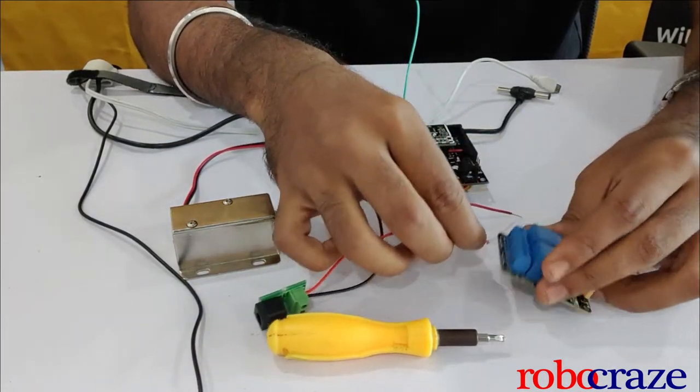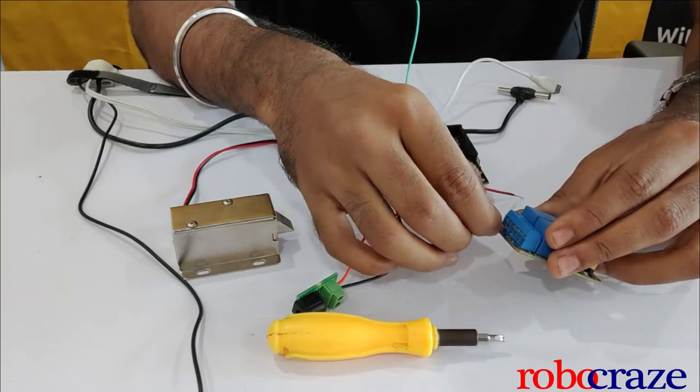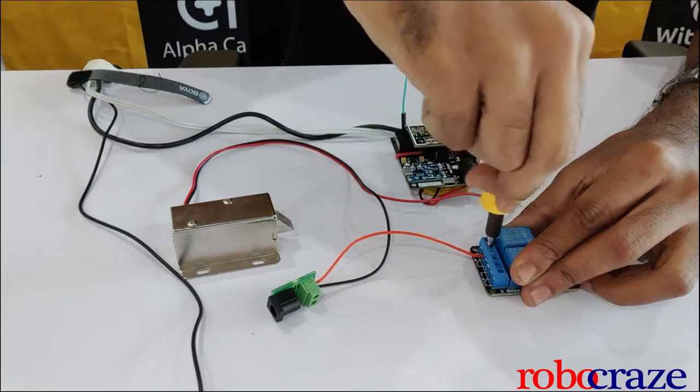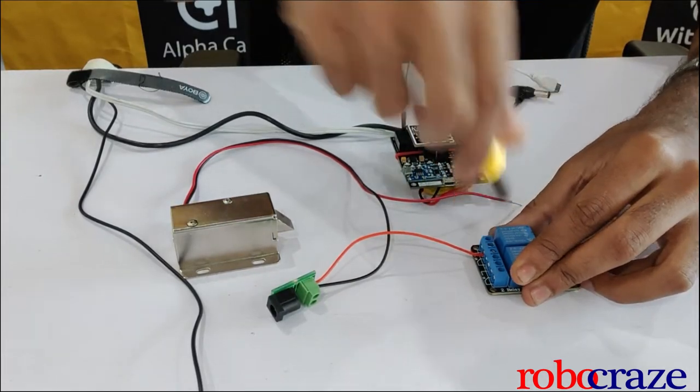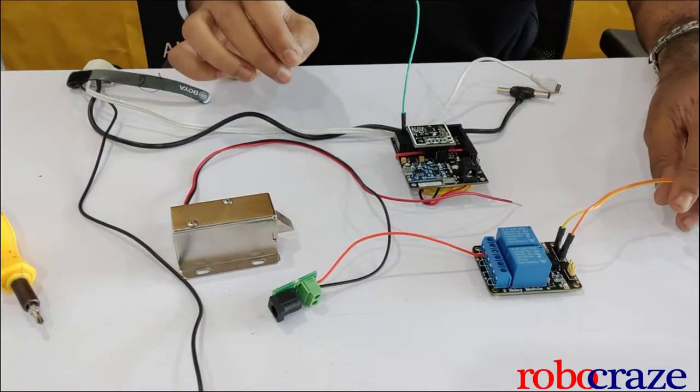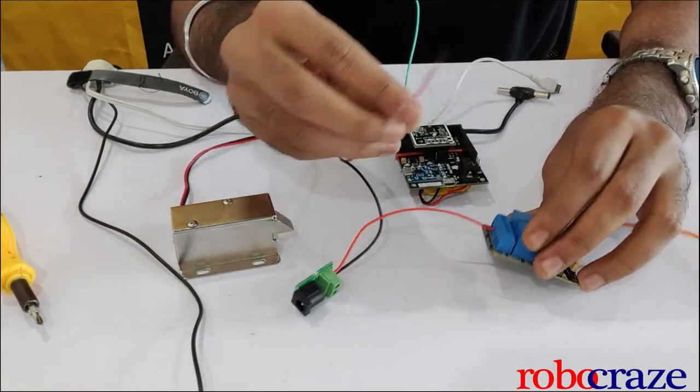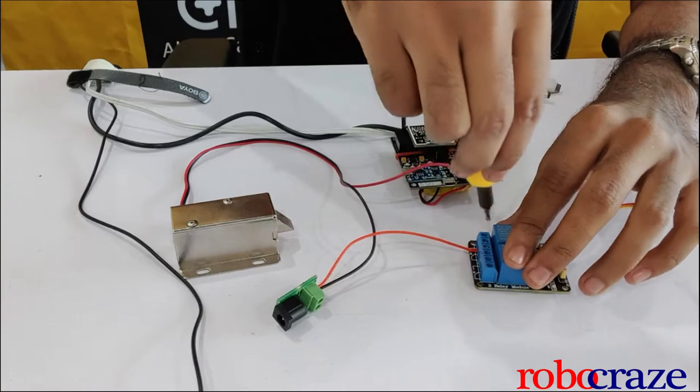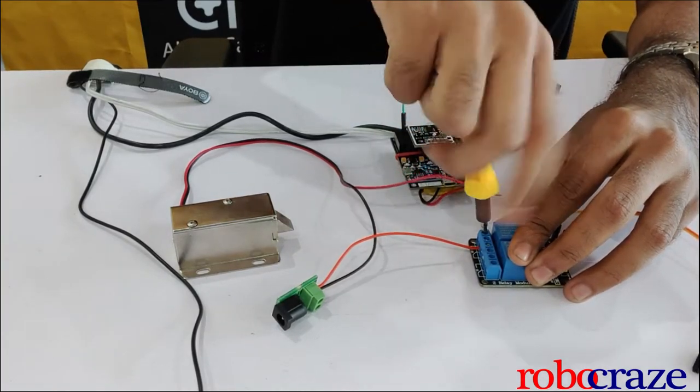The other terminal of the relay is connected to the positive pin of the solenoid lock.